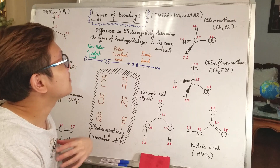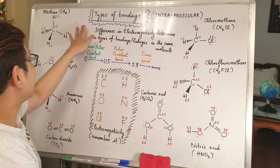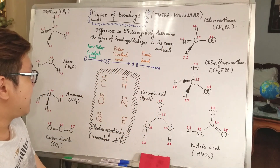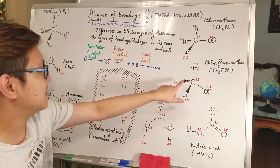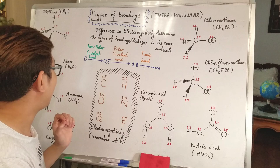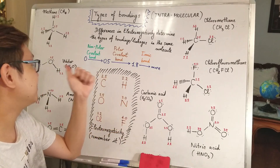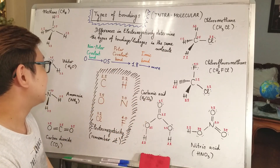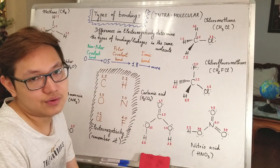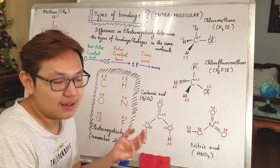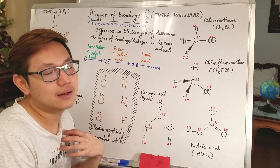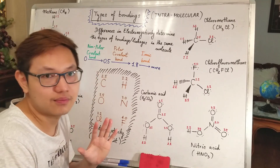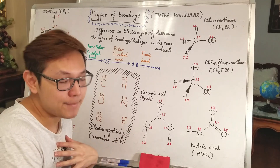Now, for intramolecular forces: I've drawn some substances on the board, and your task is to identify the type of bonding — whether it's a non-polar covalent bond, a polar covalent bond, an ionic bond, or any other kind of bonding. The secret rule to determine what kind of bonding it is lies in the knowledge about electronegativity.